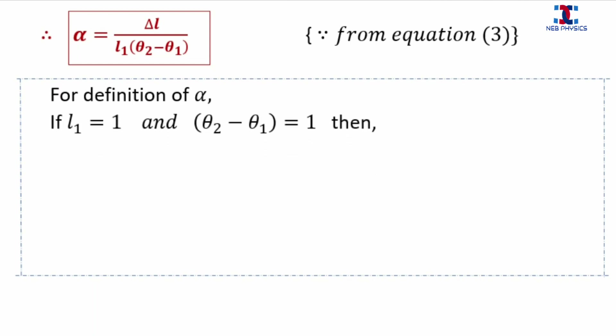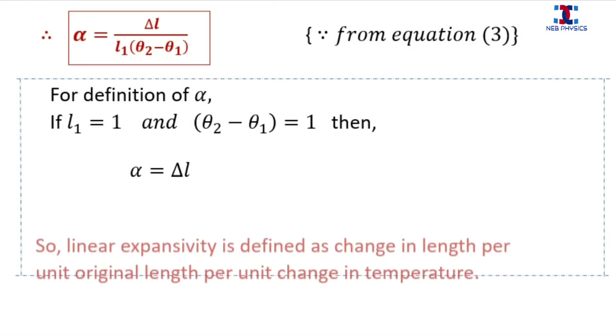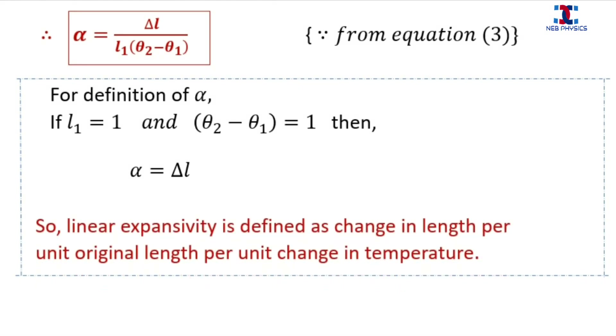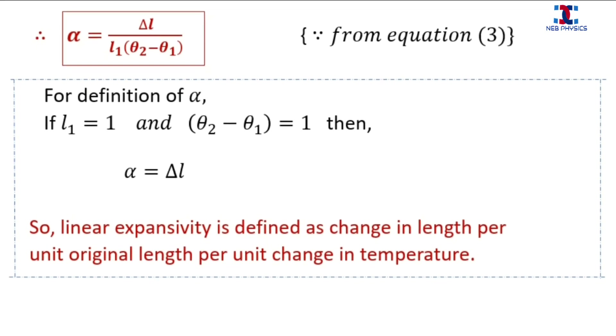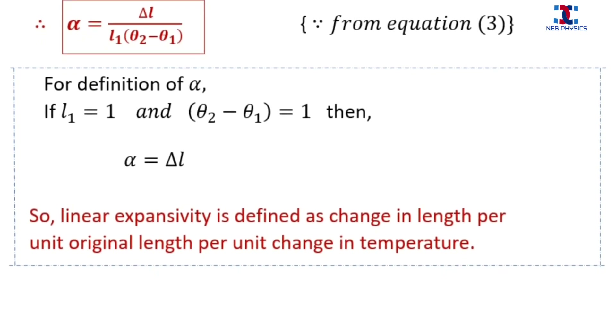For the definition, we approximate the original length of the rod to unity and the change in temperature to unity, giving α = ΔL. So the coefficient of linear expansion is defined as the change in length per unit original length per unit change in temperature.